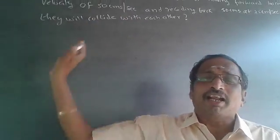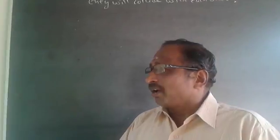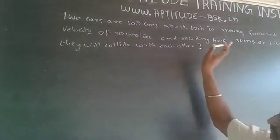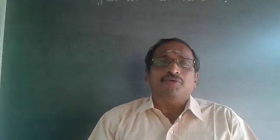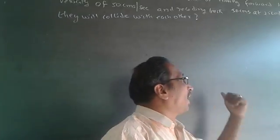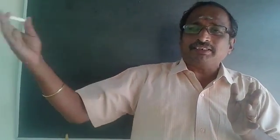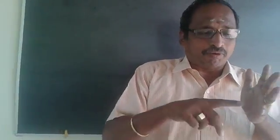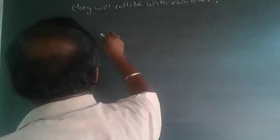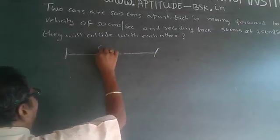Students have asked: the direction has not been given, so how will they collide? Whenever directions are not given, it is your duty to make it clear. For example, I am from Chennai going towards Madurai; my friend in Madurai is coming towards Chennai. For me, forward is Chennai to Madurai; for him, forward is Madurai to Chennai. So we are traveling in opposite directions — that is what is happening here.